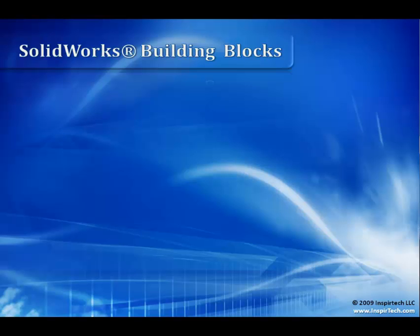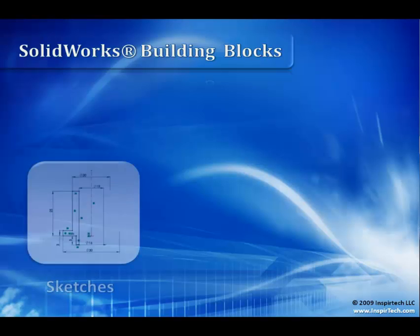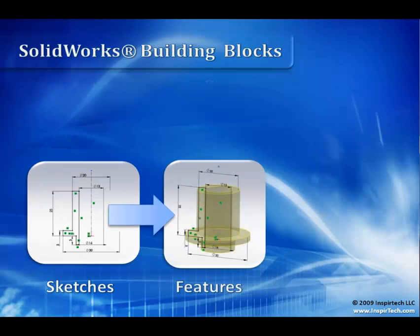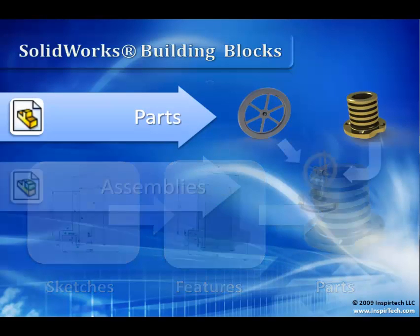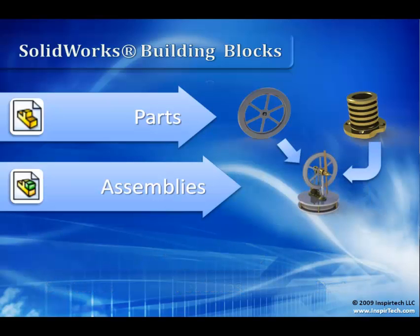The most fundamental aspect of SolidWorks is a sketch. Sketches are generally two-dimensional profiles that are then used to form features, which take this two-dimensional geometry and give it a third dimension. Parts are made up of a grouping of sketches and features. We can then take these parts and build assemblies. An assembly file is simply a file that records how a series of parts are related to each other — you can think of it as an instruction manual or a set of plans.